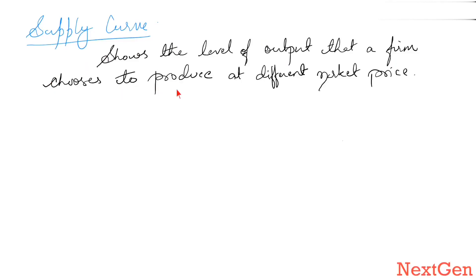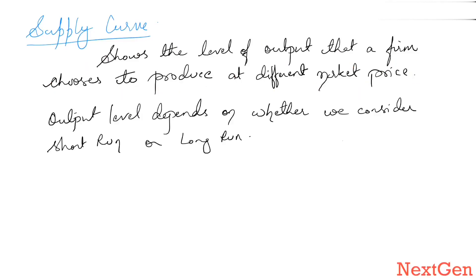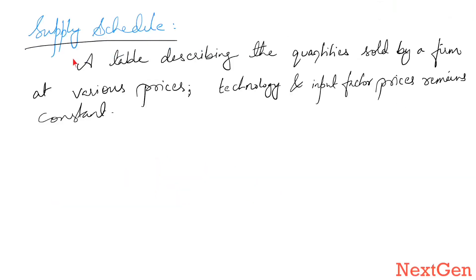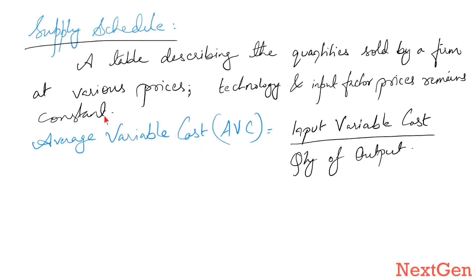A supply curve shows the level of output that a firm chooses to produce at different market prices. The output level depends on whether we consider the short run or the long run, giving us the short run and long run supply curves. A supply schedule is a table describing the quantities sold by a firm at various prices, given the technology and input factor prices, which remain constant.